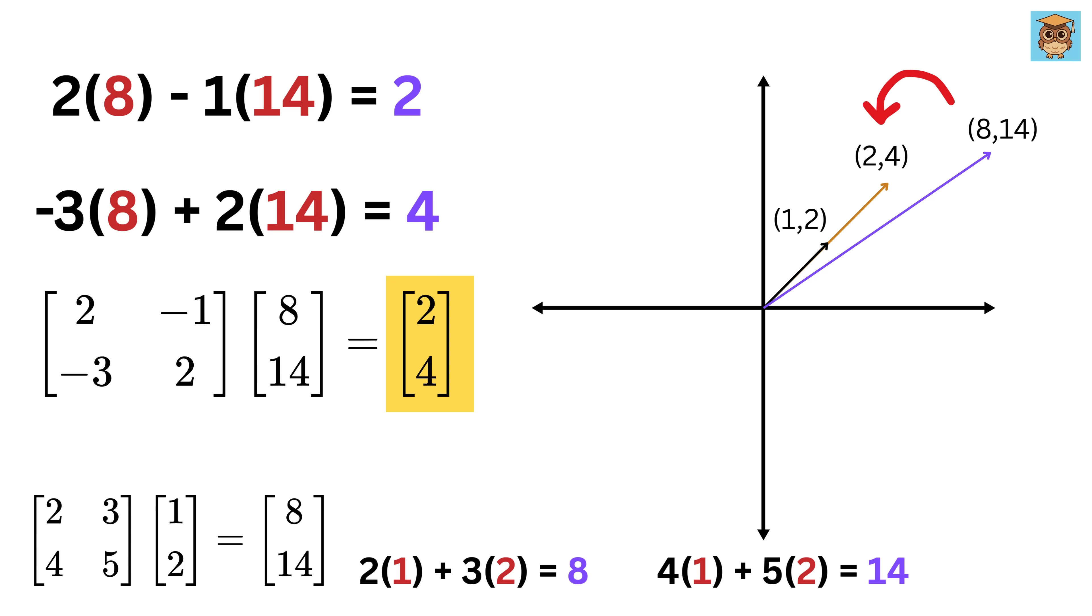So, what just happened? We applied two transformations, one after another. The first matrix transformed 1 and 2 into 8 and 14. Then, the second matrix transformed 8 and 14 into 2 and 4.